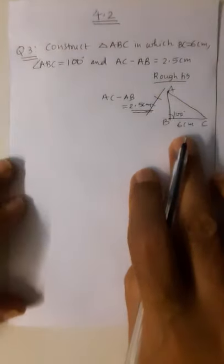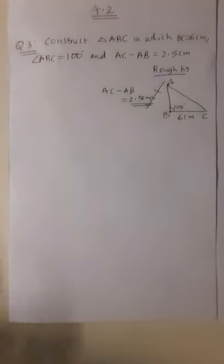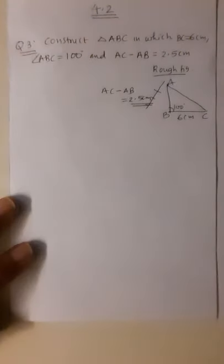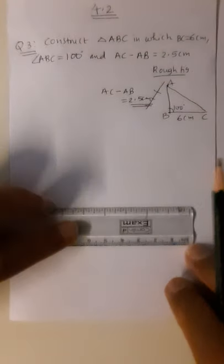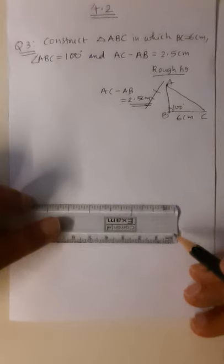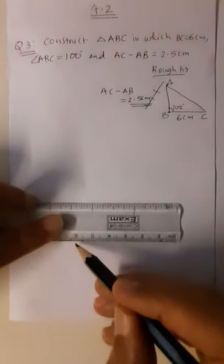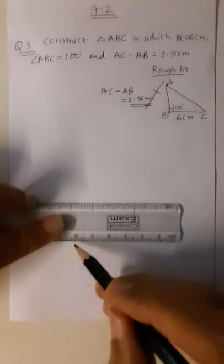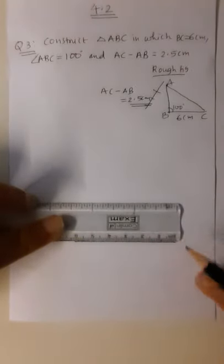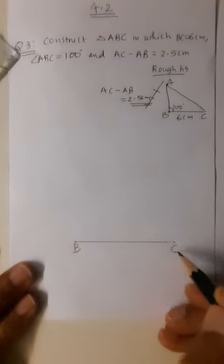In this case the construction will change a little bit. First of all we have to draw the base BC of 6 centimeter. I will mark a dot at 0 and at 6 centimeter, then join these two dots to get base BC of 6 centimeter. This is point B and this is point C — 6 centimeter.